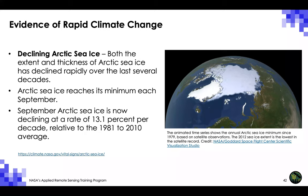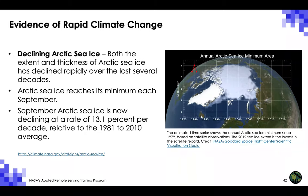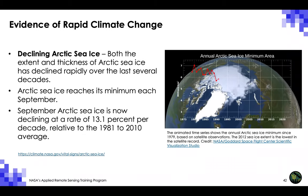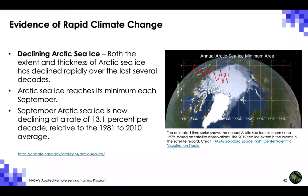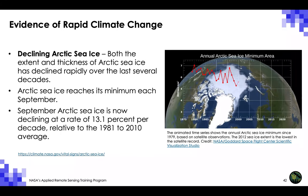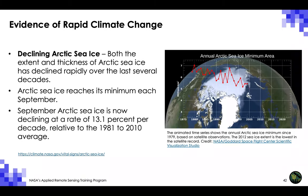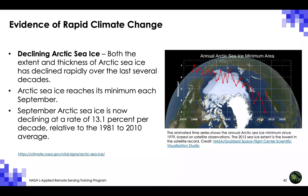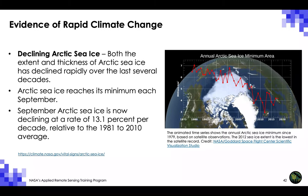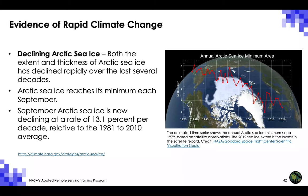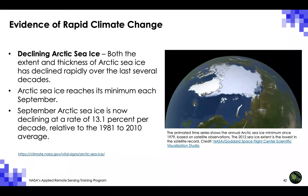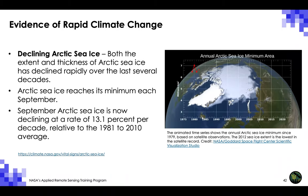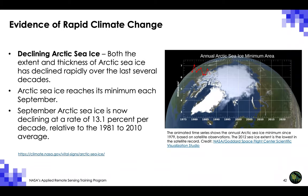Both the extent and thickness of Arctic sea ice has declined rapidly over the last several decades. Arctic sea ice minimum extent has declined significantly since satellite measurements began in 1979, with the lowest values observed since 2012. Arctic sea ice reaches its minimum each September. September Arctic sea ice is now declining at a rate of 13.1% per decade, relative to the 1981 to 2010 average. The 2012 sea ice extent is the lowest in the satellite record.